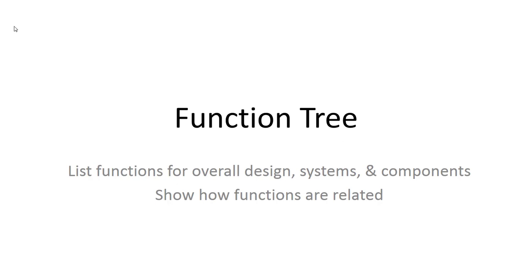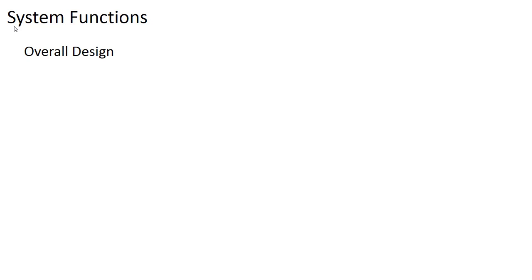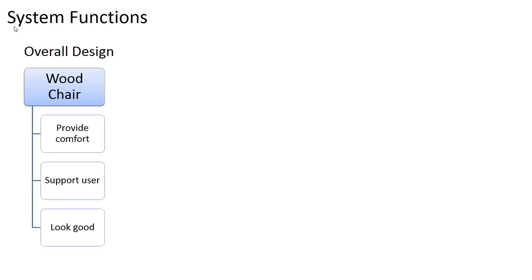Now that your design tree is done, you need to go back and consider what every piece of your design does — what is the function? If a part doesn't have a function, then it shouldn't be part of your design. We should be able to identify at least one function for every piece of that design tree. Starting at the overall design for our wood chair, it needs to be comfortable for the user, support the user so it doesn't collapse to the floor, and it has to look good.